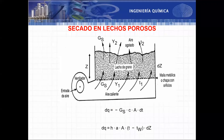Aquí tengo la entrada del aire; se calienta mediante un ventilador. Tengo la velocidad másica del aire seco y la humedad del aire y su temperatura. El aire pasa a través del lecho de partículas húmedas, a través de la porosidad, y sale por la parte superior con menor temperatura y mayor humedad, ya que el sólido evapora humedad. Vamos a llamar Z a la altura del lecho.